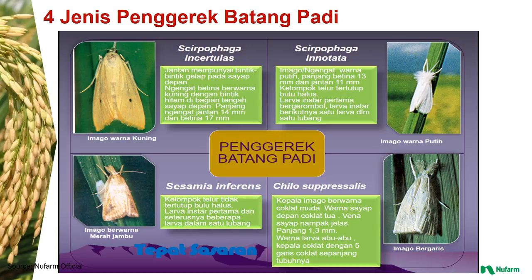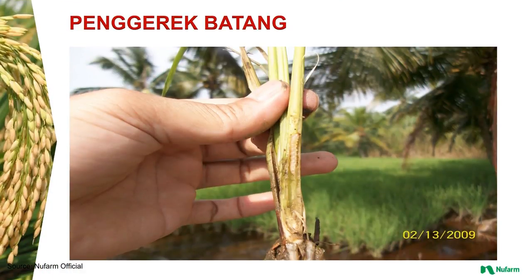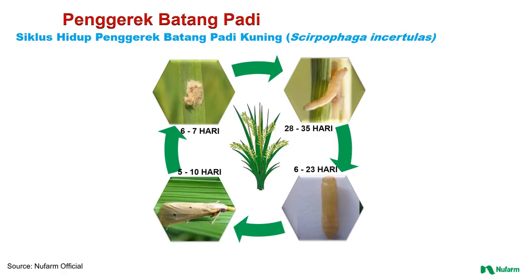Ini contoh penggerek batang pada batang padi. Penggerek batang padi siklus hidupnya dimulai dari telur dengan masa periode 6-7 hari, kemudian berubah menjadi ulat atau larva dengan masa 28-35 hari, kemudian berubah menjadi kepompong atau pupa dengan masa 6-23 hari, dan terakhir berubah menjadi imago atau kupu-kupu dewasa dengan masa 5-10 hari.